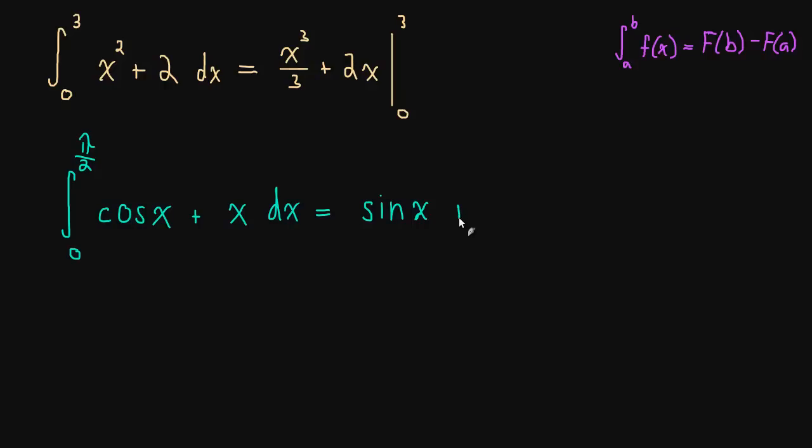The antiderivative of x is just x squared over 2. And then we're going to evaluate this from 0 to pi over 2. And once we find the antiderivative, the rest is really just arithmetic. So I'm just going to switch colors here because I feel like it.